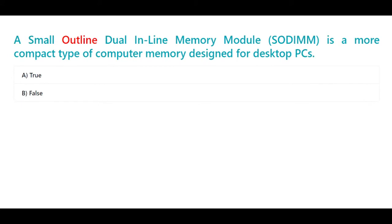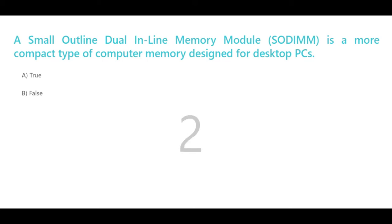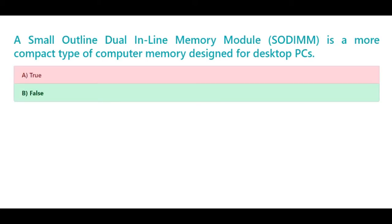A Small Outline Dual-Inline Memory Module (SODIMM) is a more compact type of computer memory designed for desktop PCs. A. True. B. False. The correct answer is B. False.